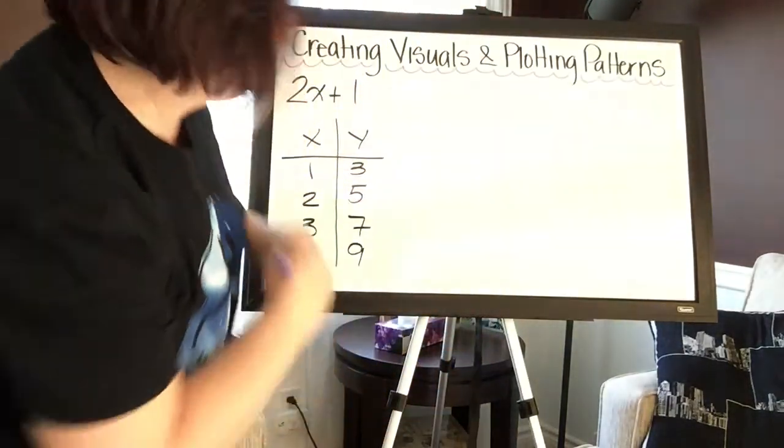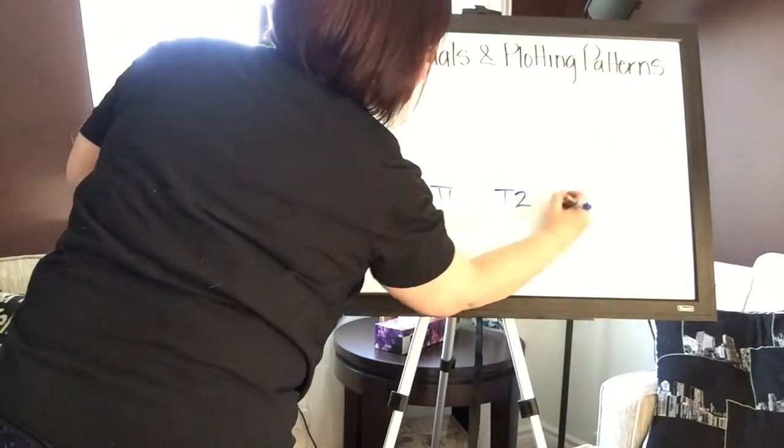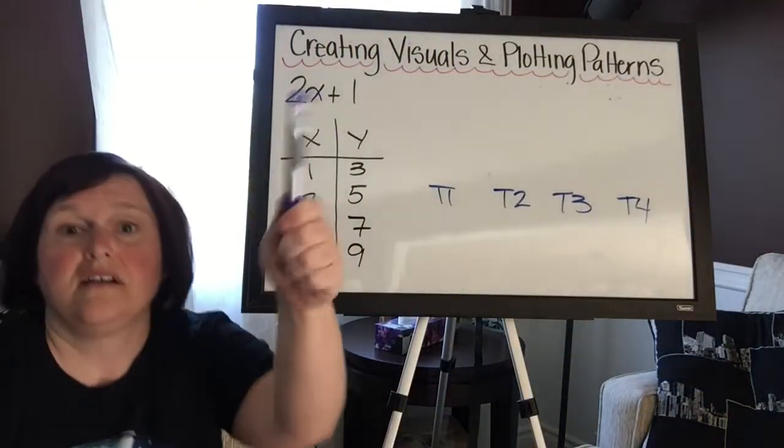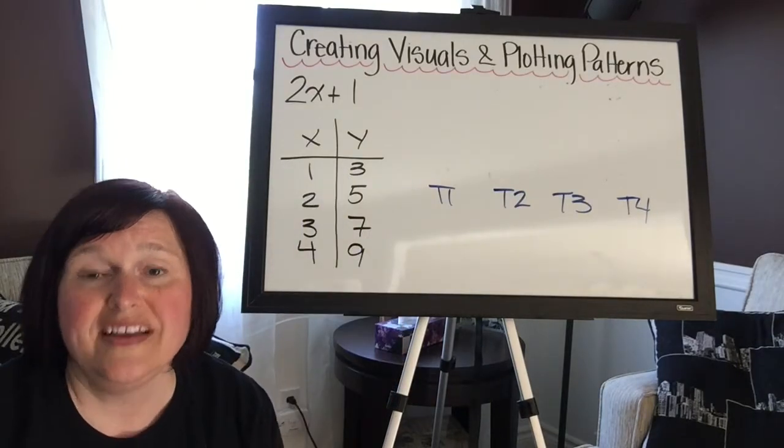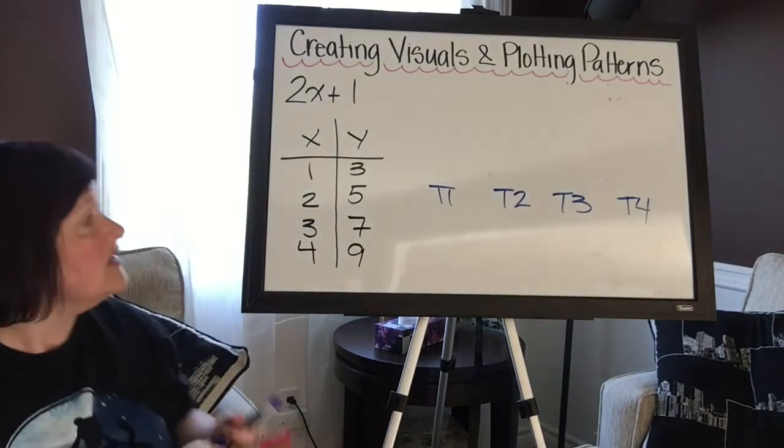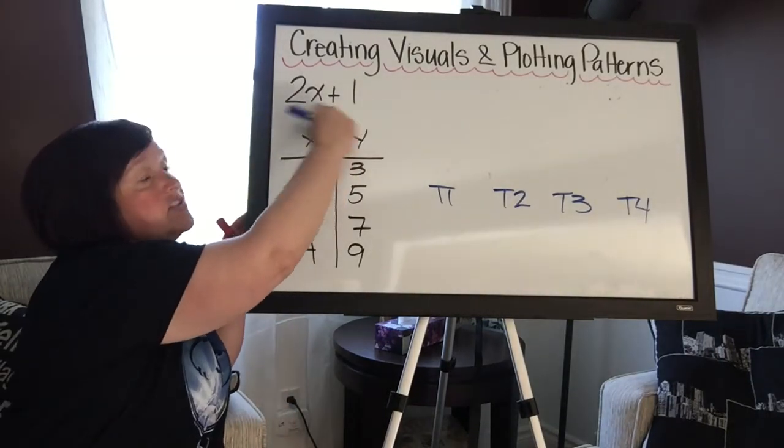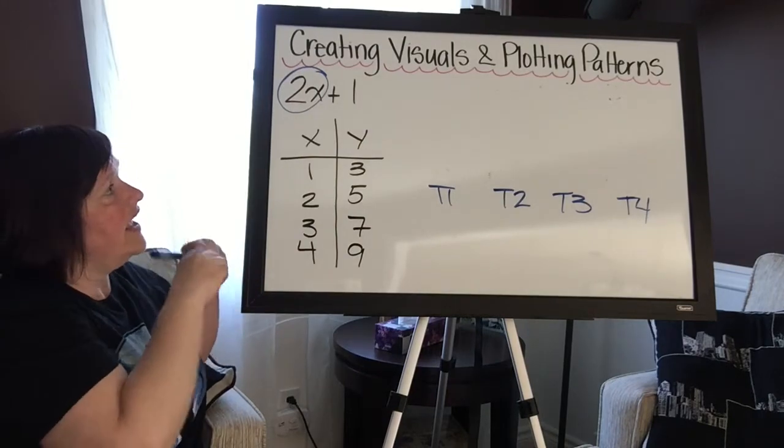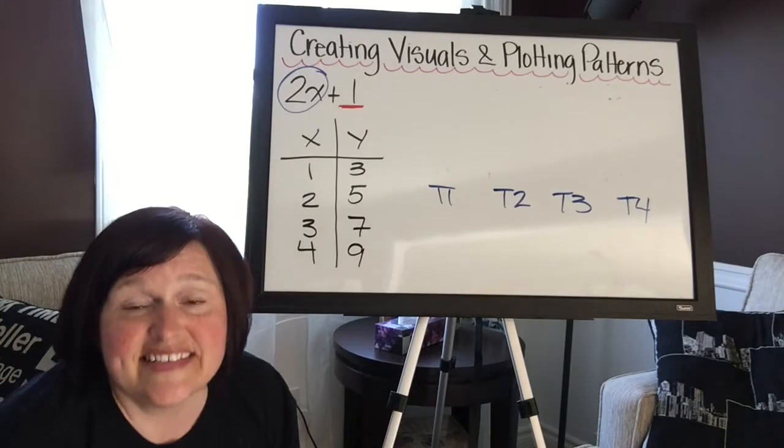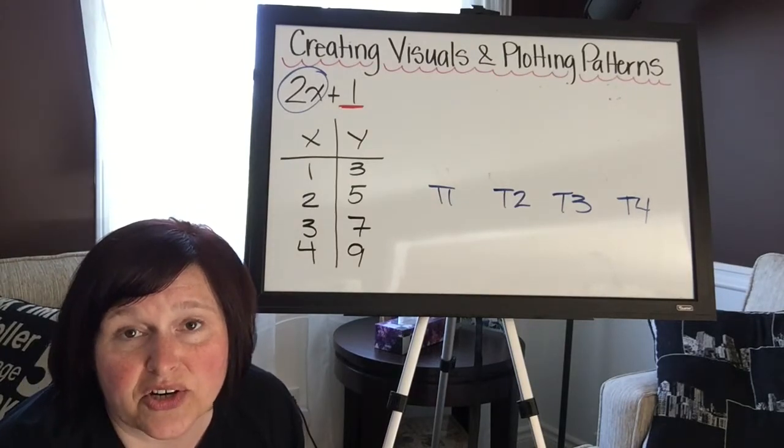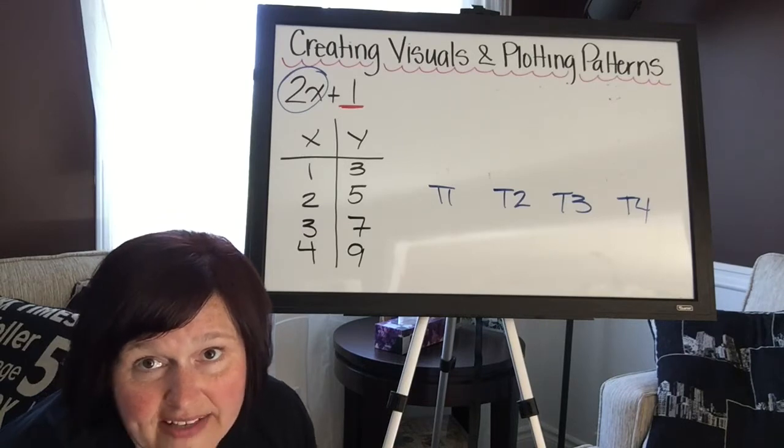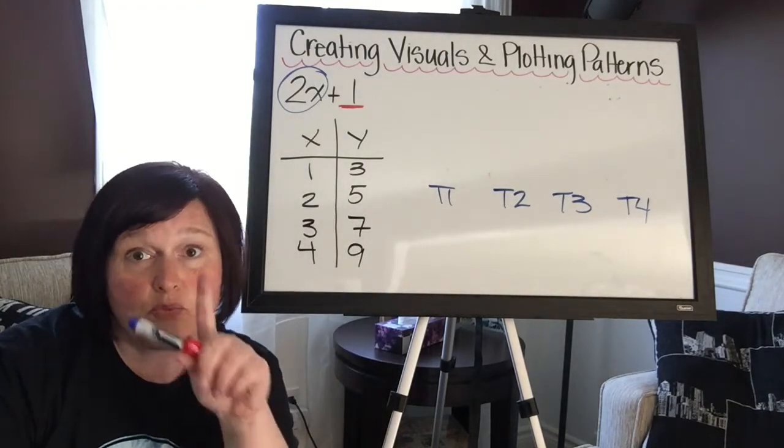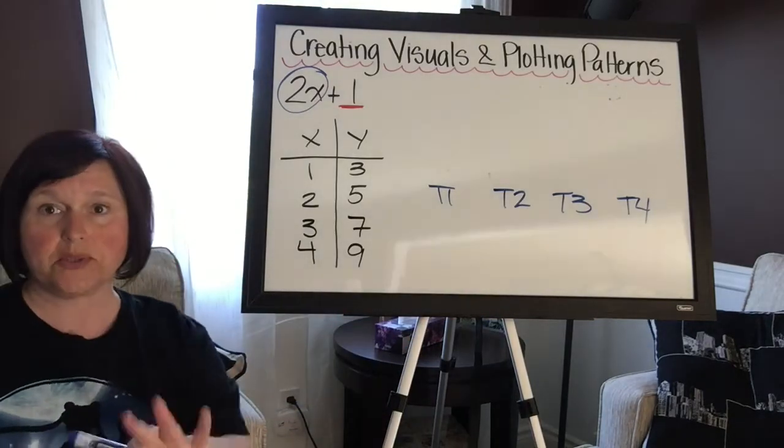Let's say that term number one, term number two, term number three, term number four. Let's say that blue circles are going to be my variable and red squares are going to be my constant. Now you know, going back to our original algebraic expression, this is my variable and this is my constant. Your constant is going to stay the same in every single term number. This means that if I said blue circles for the variable and red squares for the constant, that plus one, I just have to draw one red square in every single visual. So let's start off with the red squares.